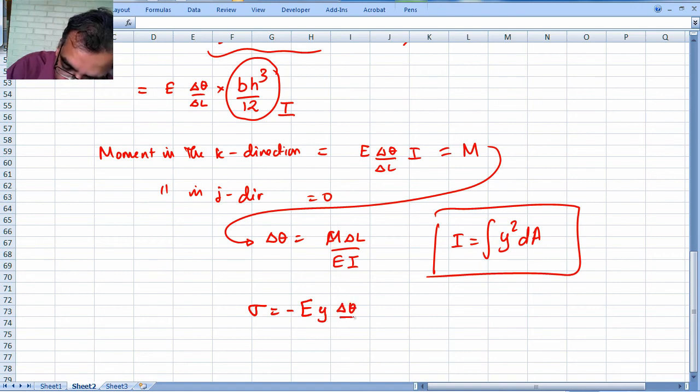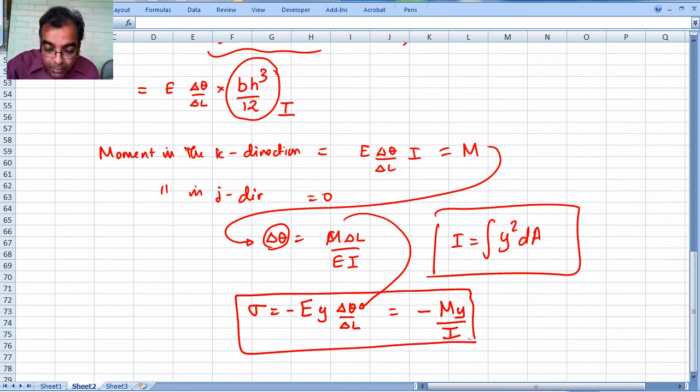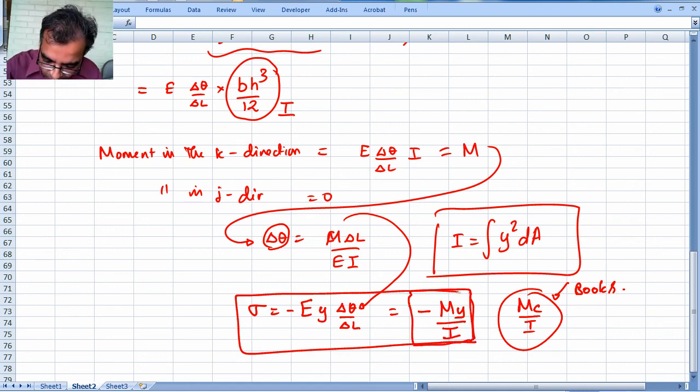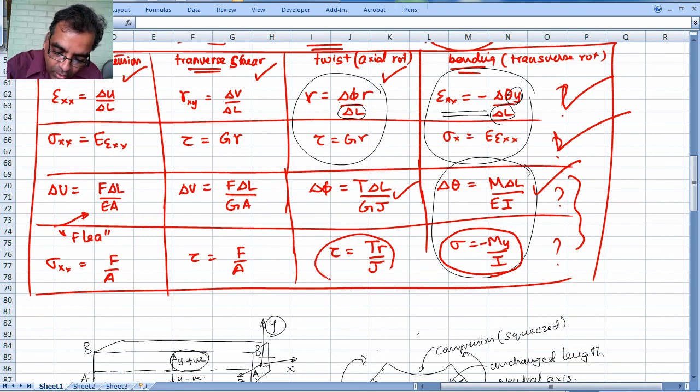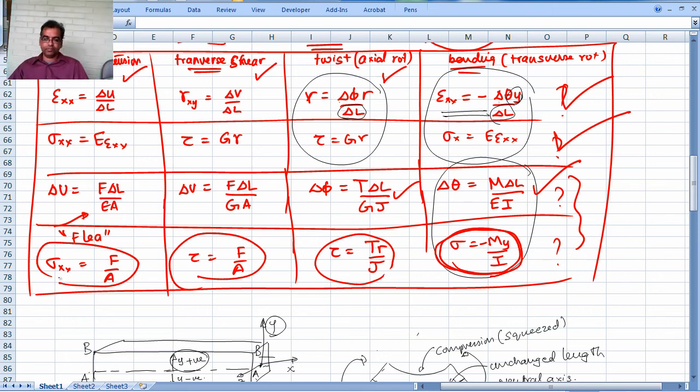Sigma was minus E y delta theta over delta l, right? So I can substitute for delta theta here and the E will cancel out, and I will get minus My over I. In many books this will be written as Mc over I - I want you to realize this is in many books - but I want you to realize that the formula is minus My over I because I want you to get the signs correctly. I want you to memorize it like this, and you will see that's the counterpart to this guy - Tr over J, minus My over I, F over A. Can you see how beautifully all those things work? There's nothing to it, you just have to be systematic. With that, we are done for this lesson.